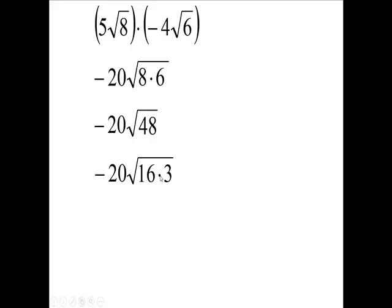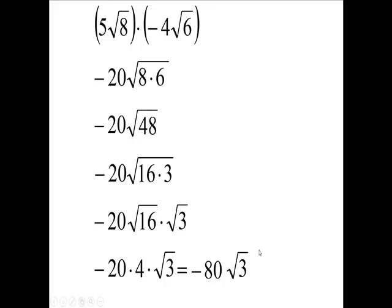And then I'm going to split this into two radical signs, so I'll have my minus 20. I'll have the square root of 16 and the square root of 3. Now, the square root of 16 is 4, so I'm going to have negative 20 times 4 times the square root of 3. And 20 times 4 is 80, so you're going to get a negative 80, the square root of 3.